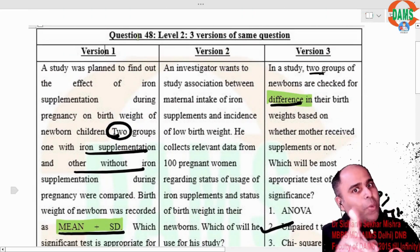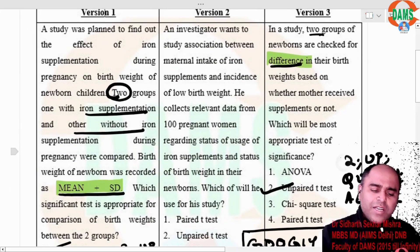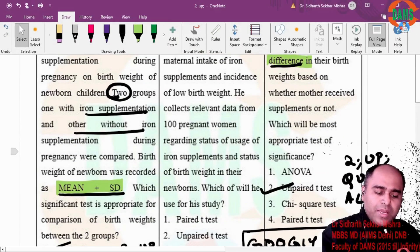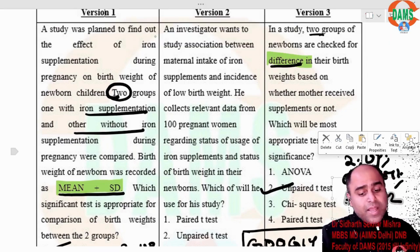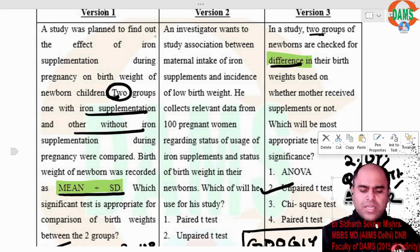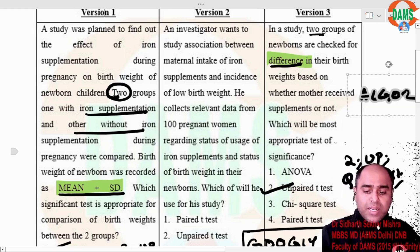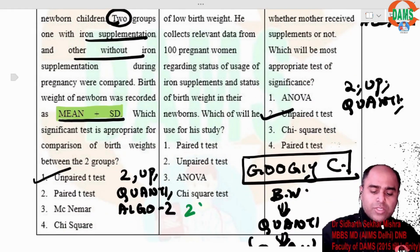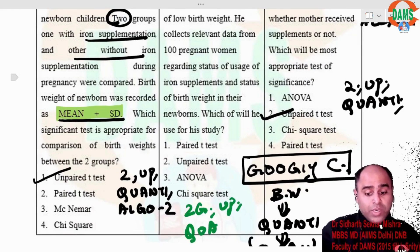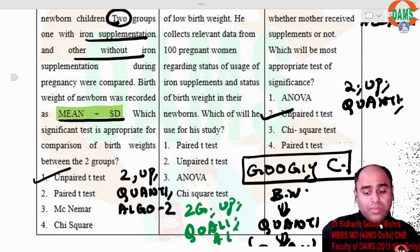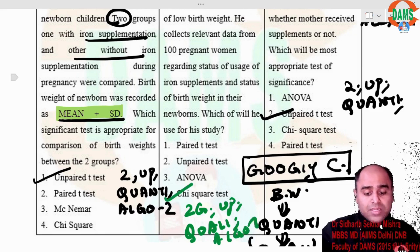So an investigator wants to study the association between maternal intake of iron supplements and incidence of low birth weight. He collects relevant data from 100 pregnant women regarding the status of usage of iron supplements and the status of birth weights, which of the study it is. So again, it is two groups, unpaired, nothing is mentioned. So it is quali, algorithm number one, and my answer is chi-squared.